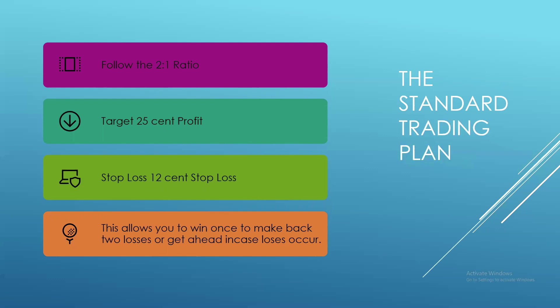So what is the standard trading plan for a day trade? I follow the two-to-one ratio. The two-to-one ratio teaches you how to win twice your money, so you can lose two times, win once, and be back to even. We generally go after around a 25-cent profit, with a stop loss of around 10 to 12 cents. That 25-cent target with a 12-cent stop loss is basically half of our target — that's the two-to-one ratio.